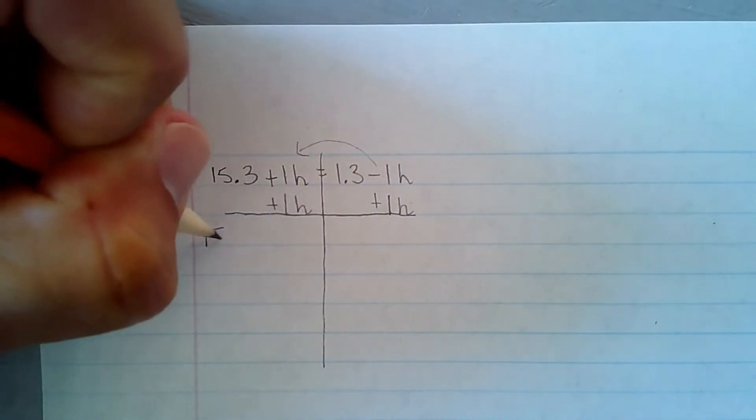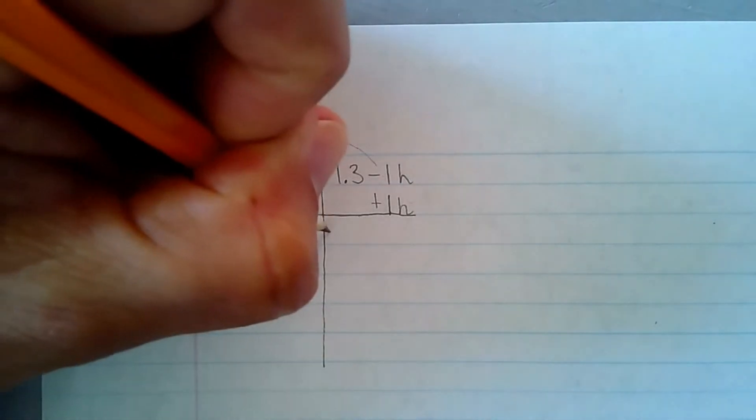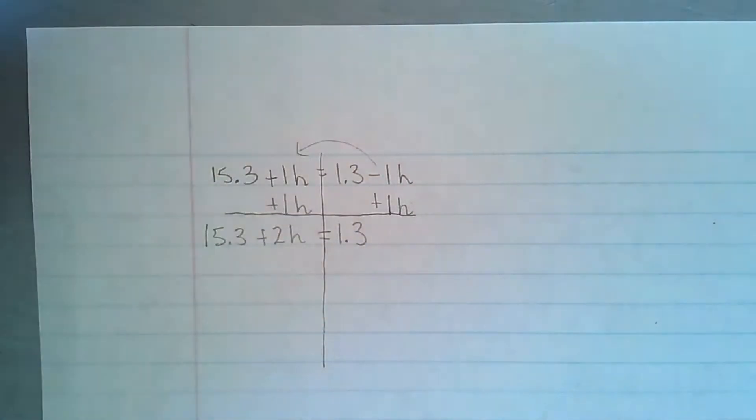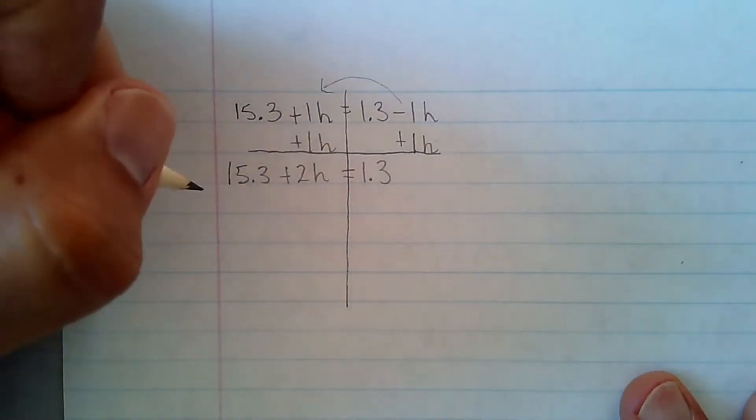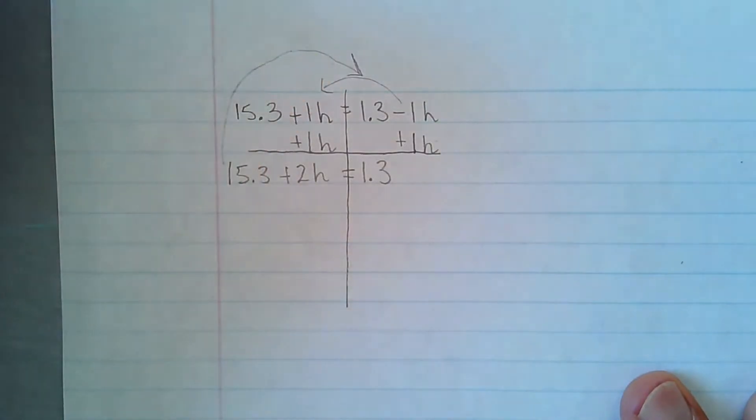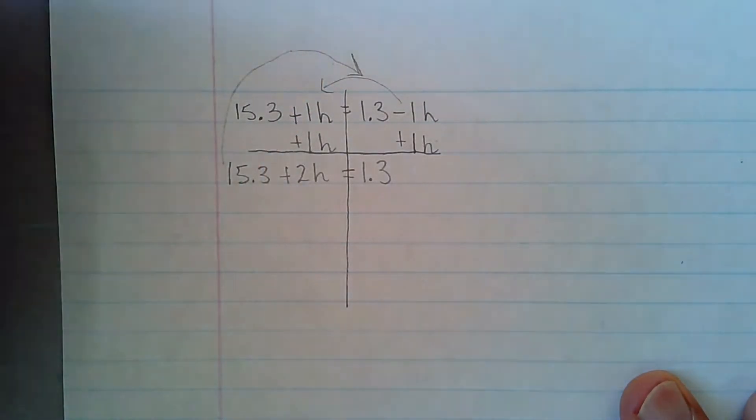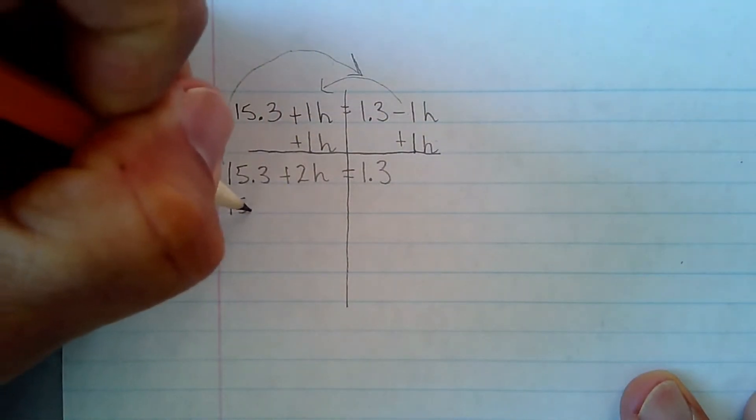I have 15.3 plus 2h equals 1.3. And now I'm going to bring this over to the other side. And again, since it has to pass this line, inverse operations, I have to subtract 15.3.